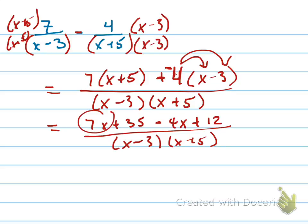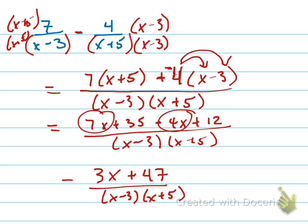Now add like terms. That's 3x plus 47 all over x minus 3, x plus 5. And that's your answer.